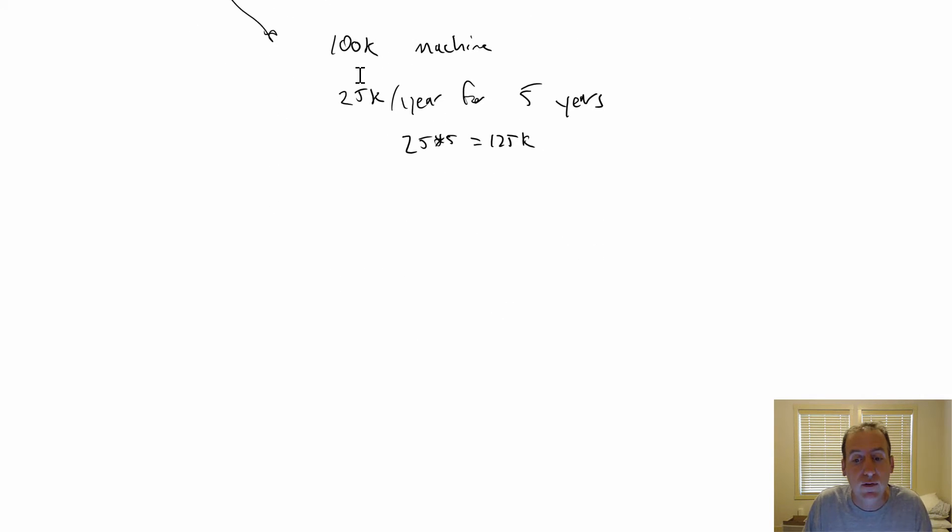To compute a payback period, it's fairly straightforward. You look at the positive cash flows generated and the initial investment for the asset. You say it's a $100,000 asset, whatever your investment happens to be at the start, you divide by the recurring cash flows, that's $25,000 per year. In four years, this thing will have paid for itself. If it generates $25,000 a year and costs me $100,000, in four years the thing's paid for itself.